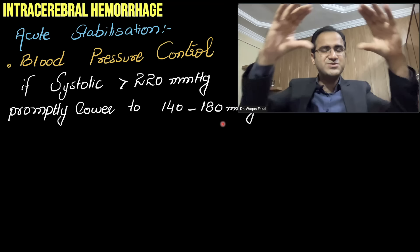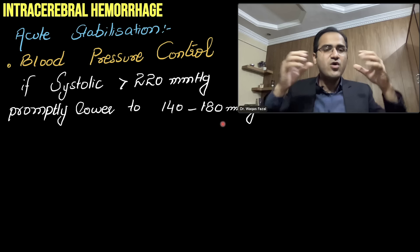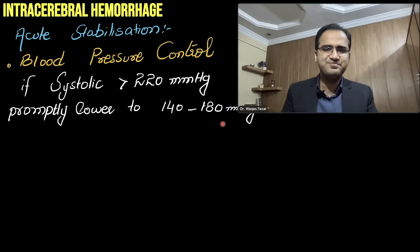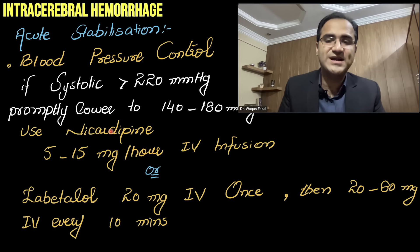When systolic blood pressure is greater than 220 mmHg, promptly lower it to 140–180 mmHg. You can use nicardipine, a calcium channel blocker, at 5–15 mg/hour IV infusion, or the beta blocker labetalol 20 mg IV once, then 20–80 mg every 10 minutes.